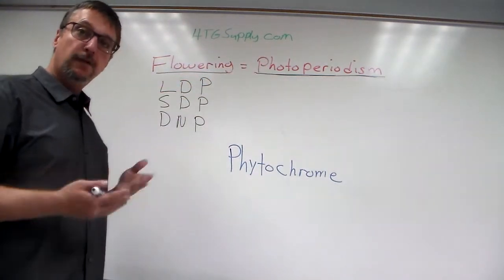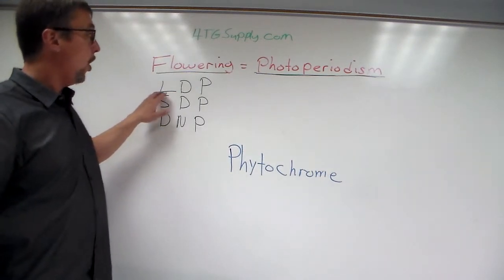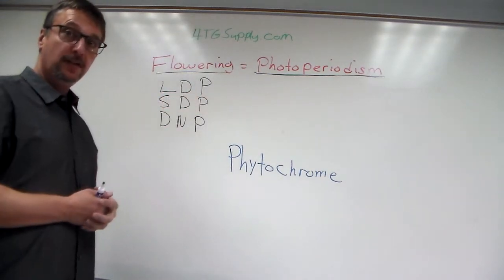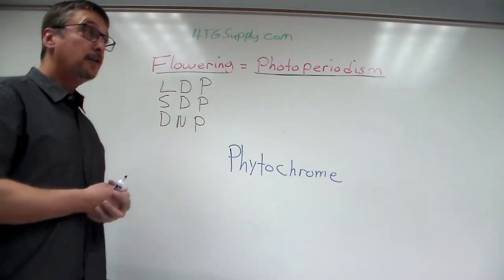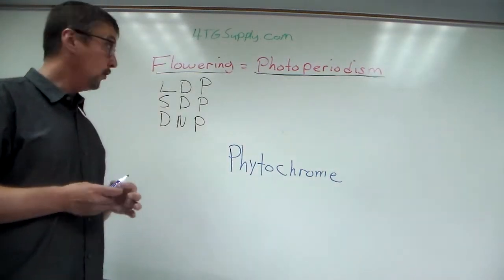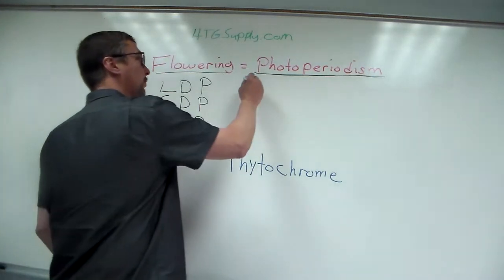Different plants will flower at different times. We have what are called long day plants. These are plants that flower when the days are long. Now it turns out it's actually the darkness that encourages flowering. So a better term for these would be short night plants.